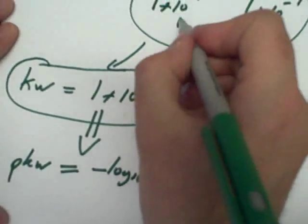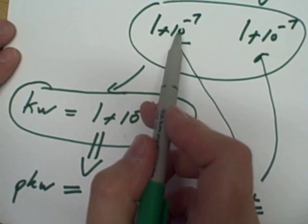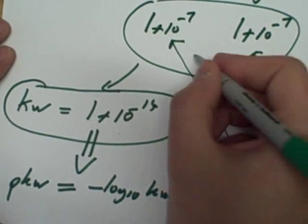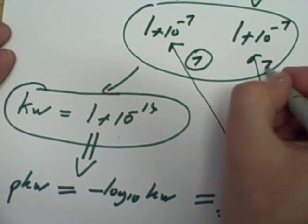Now what that means is, thinking about this, you take 1 times 10 to the minus 7, and you log it, take off the minus, what do you end up with? 7. OH minus, do exactly the same thing, 7.